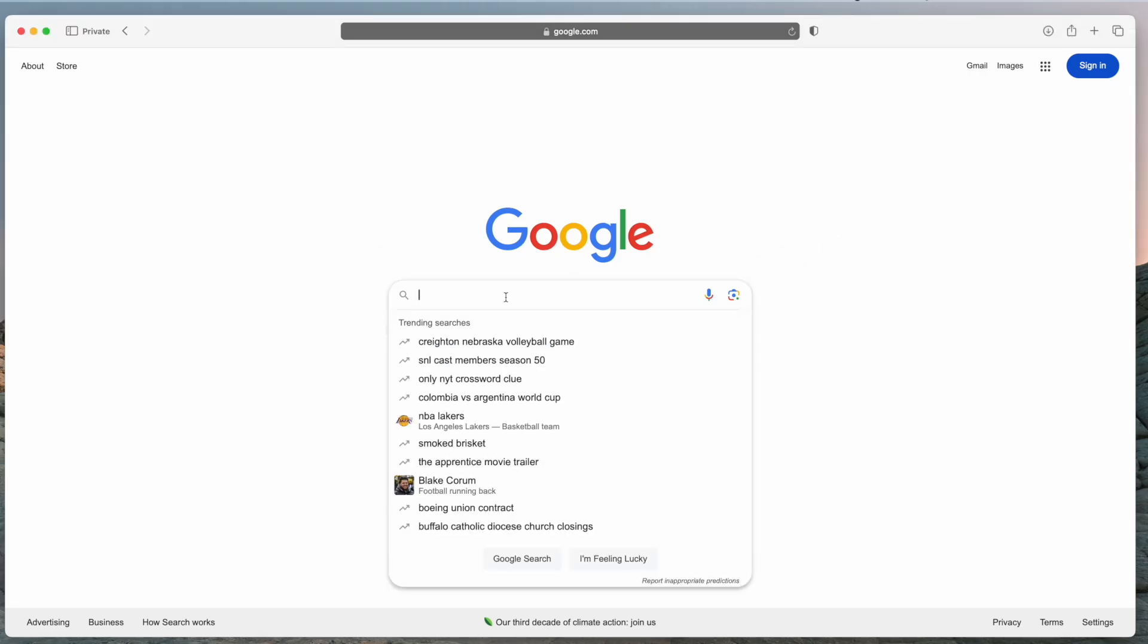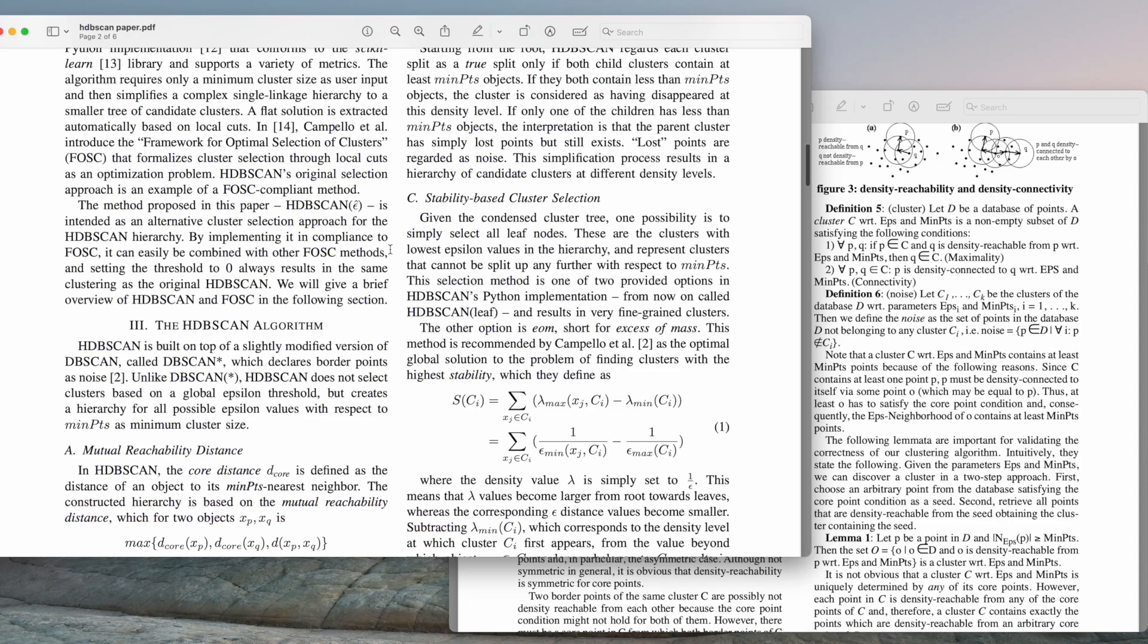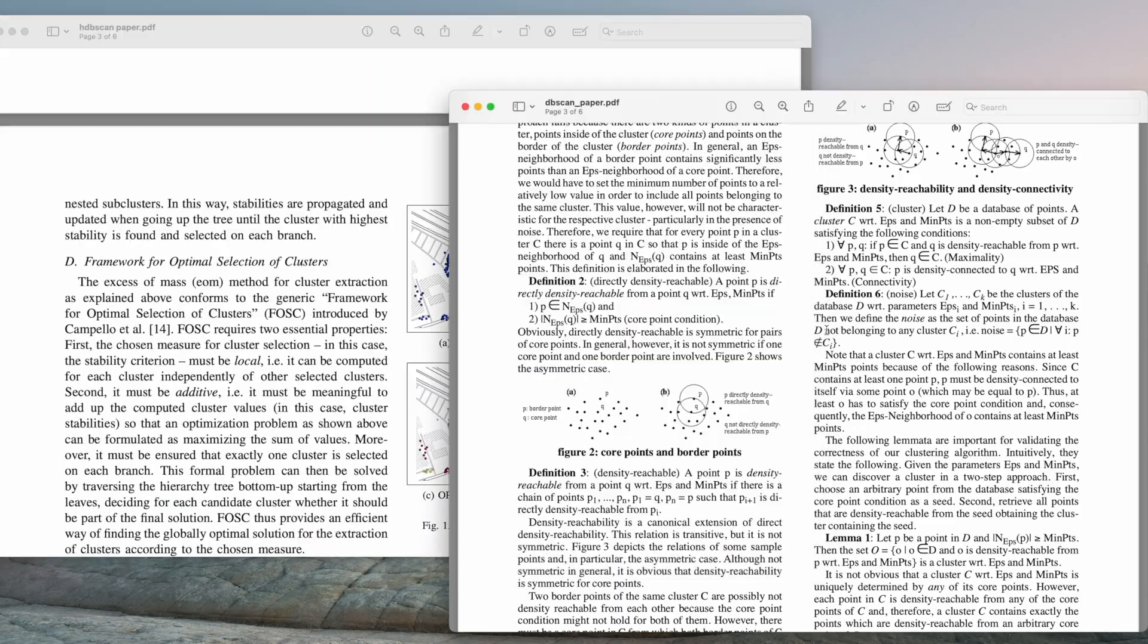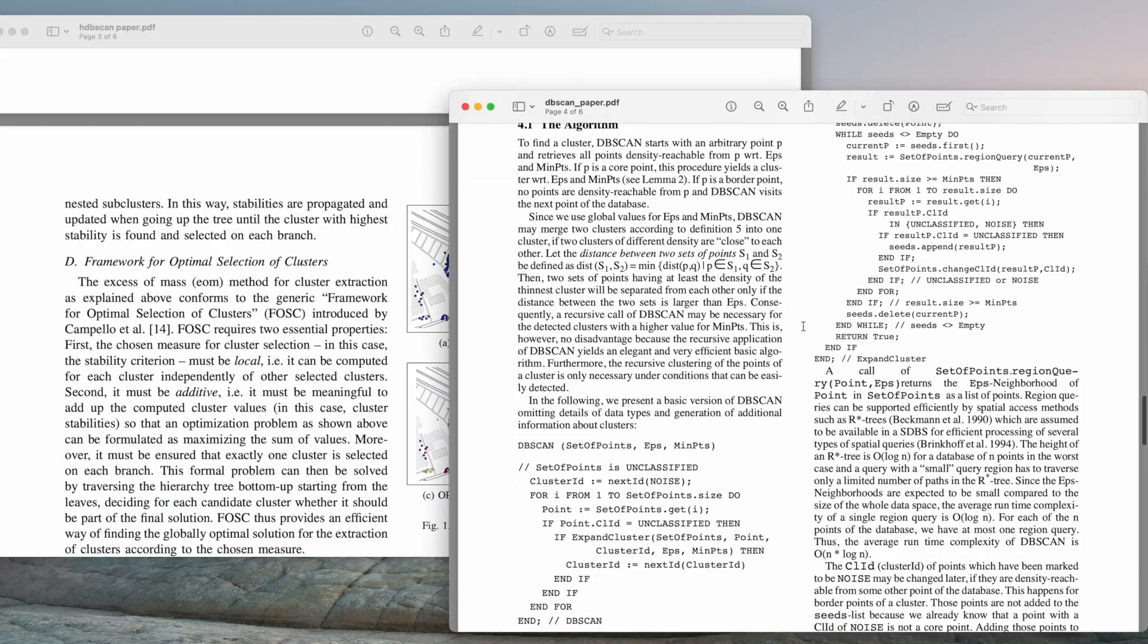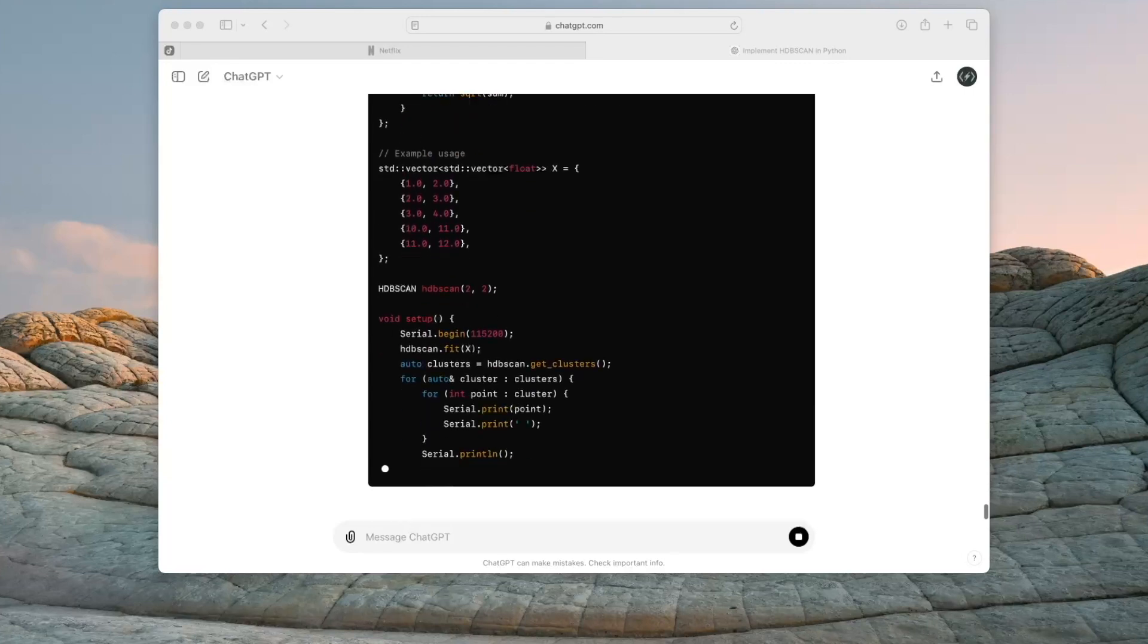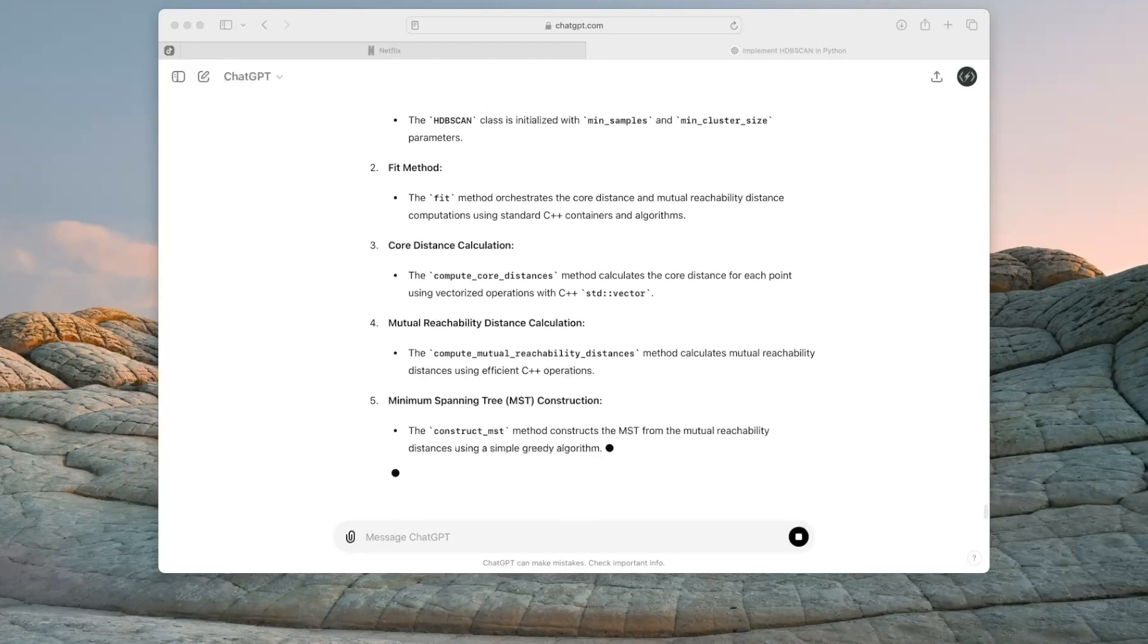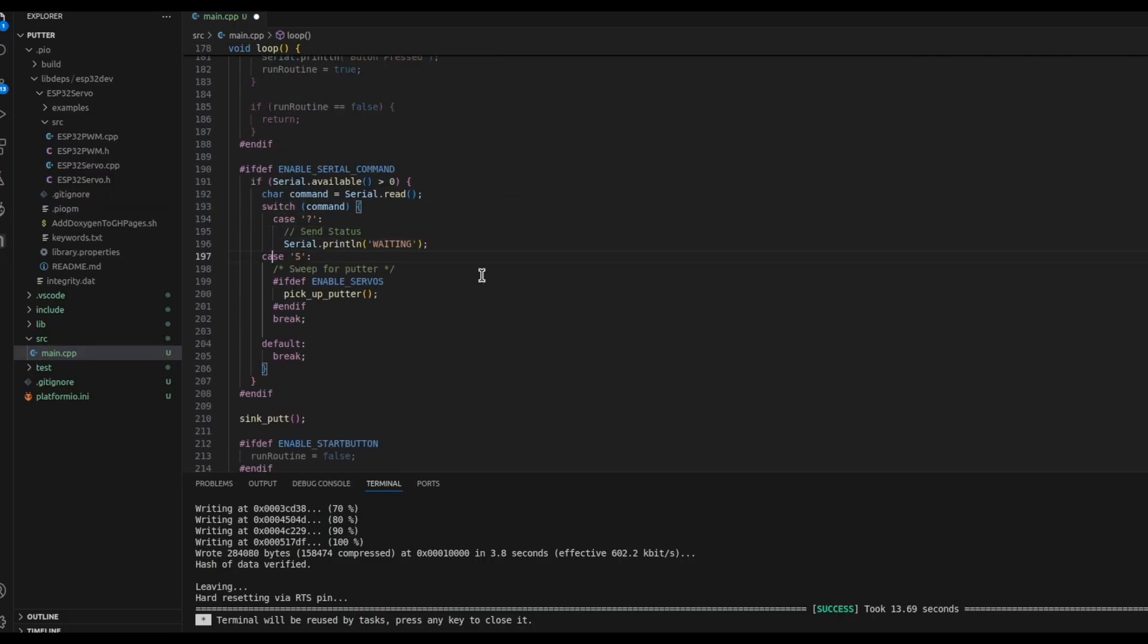I couldn't really find an implementation of HDB scan that would work on a microcontroller, and I really didn't want to implement it from the white paper. So, I did the next best thing. I asked ChatGPT to do it for me. I mean, it got me 90% of the way there, I didn't have to write it from scratch. I just needed to add a little bit of filtering logic and it was good to go.